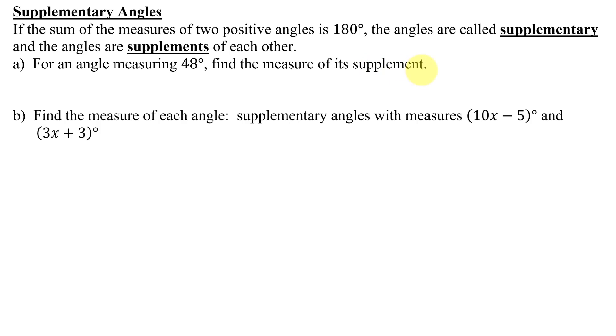So remember, an angle and its supplement have to add to 180 degrees. So to find the supplement, we take 180 degrees and subtract the given angle of 48 degrees. So what is 180 degrees minus 48 degrees? It's 132 degrees.